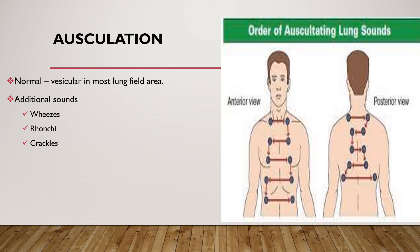Crackles or crepitations are sounds heard during inspiration that are not cleared by coughing. To assess crackles, first ask the patient to cough and clear their airway; if the crackles persist, they indicate the presence of fluid in the alveoli or air tubes. Crackles are of three types: fine, medium, and coarse. Bronchial breath sound is a harsh, clear breath sound equal in both inspiration and expiration, due to suppression of the vesicular component when alveoli are not functioning. Amphoric breathing is a high-pitched metallic-toned bronchial breath sound occurring in open pneumothorax or cavities.